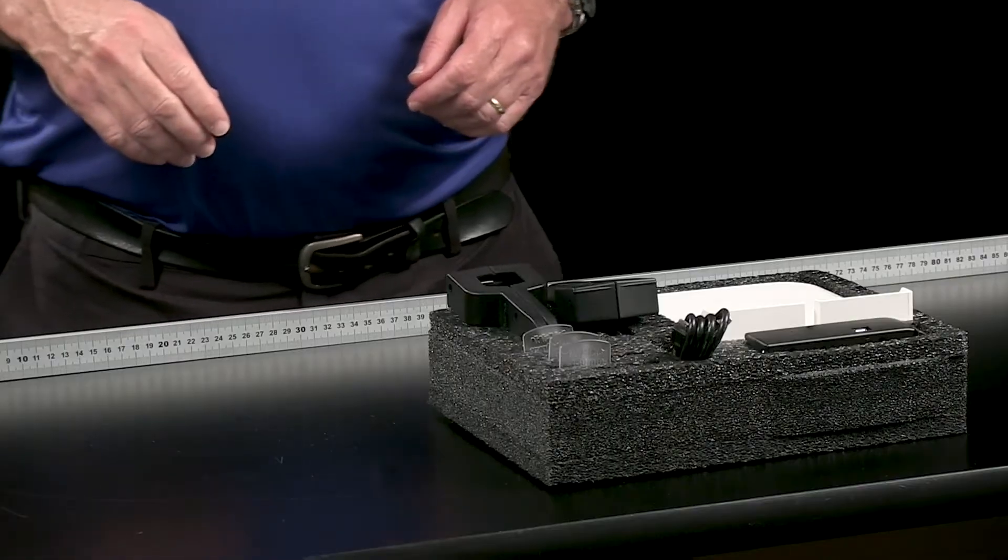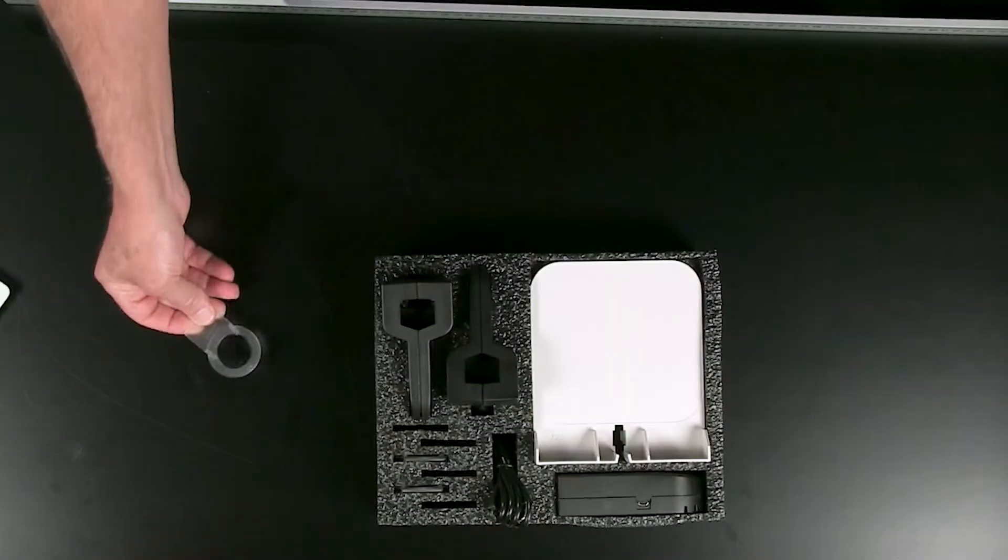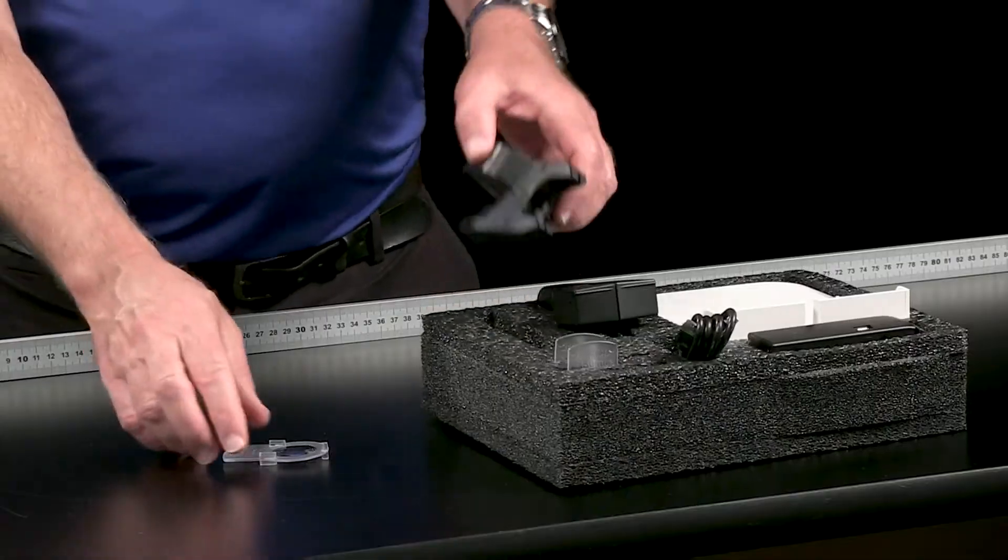It includes two convex lenses with focal lengths of 100 and 200 millimeters and a concave lens with a focal length of negative 150 millimeters. Each lens has a large built-in handle to prevent fingerprints when inserting into one of the two component holders.